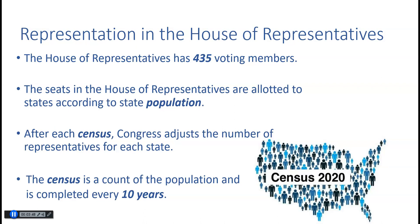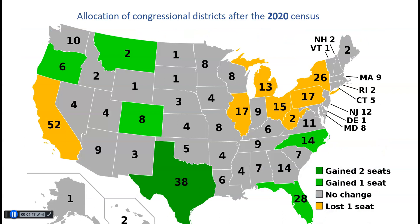The House has 435 voting members. Seats are allotted to states according to state population, and after each census, Congress adjusts the number of representatives for each state. A census is a count of the whole population of the country, completed every 10 years. Looking at the allocation map after the 2020 census, Missouri has eight representatives. Some states like the green states gained seats in the House, while states such as Illinois or California lost seats.